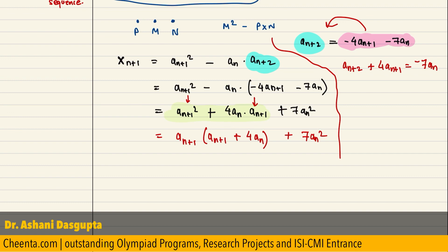A(n+2) plus 4 a(n+1) equal to negative 7 an. So, look at this, this thing here and this thing here are same.